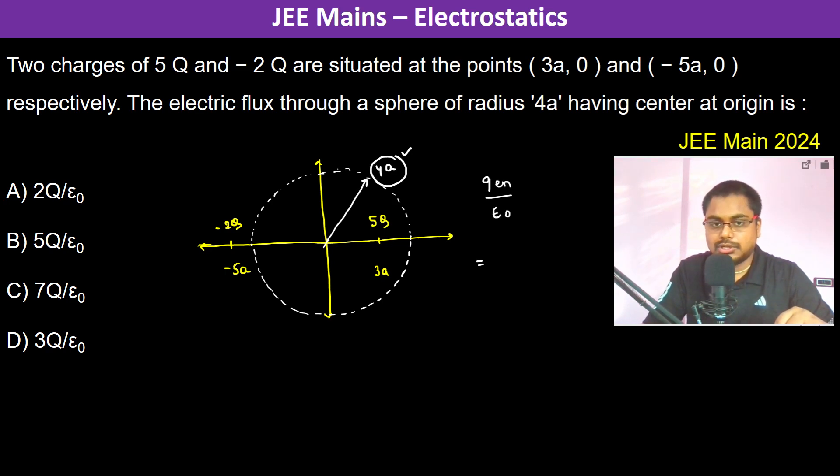What is q_enclosed? Only this charge is getting enclosed - you see, this is outside the sphere. So therefore it's going to be 5q/ε₀. The option is correct. Thank you.